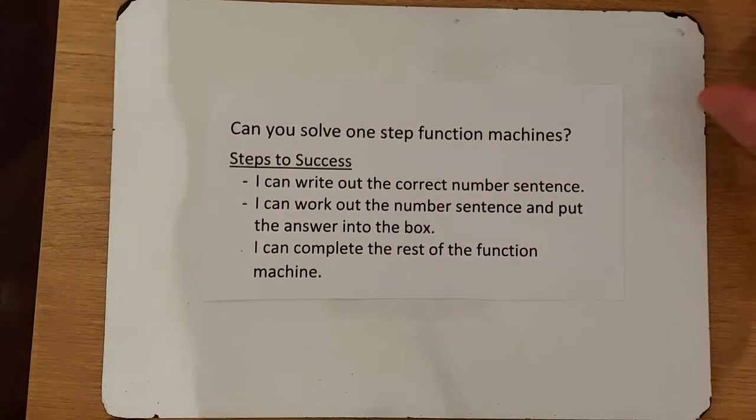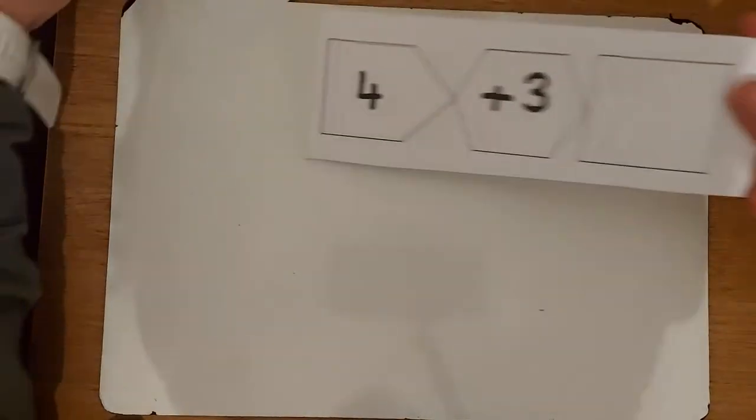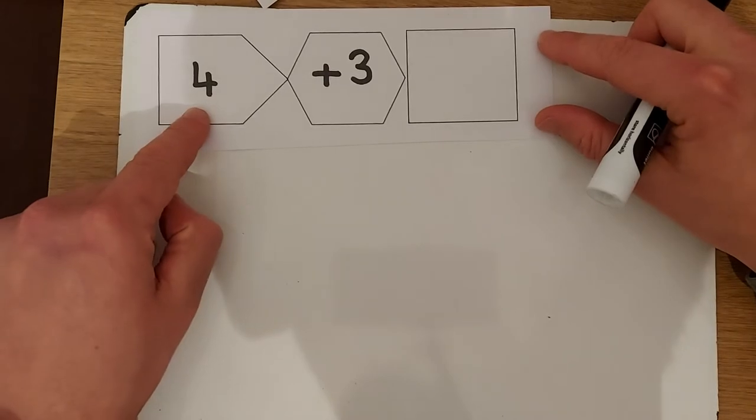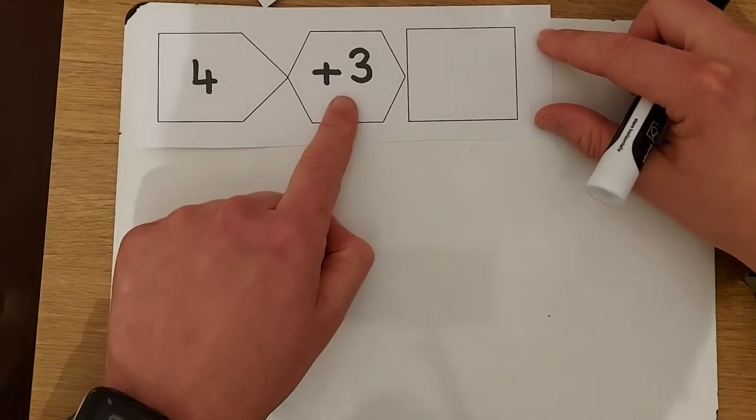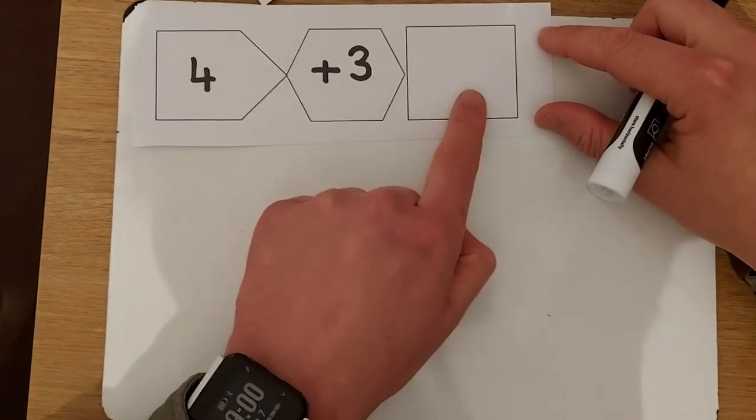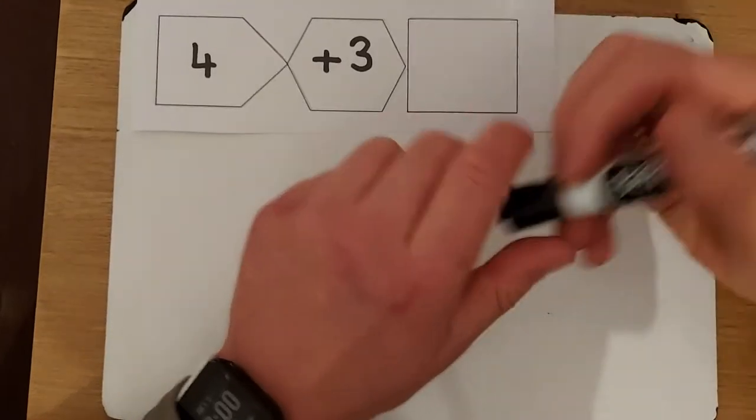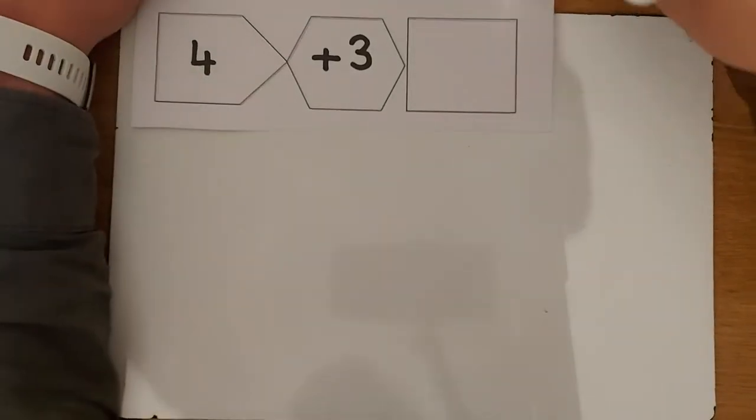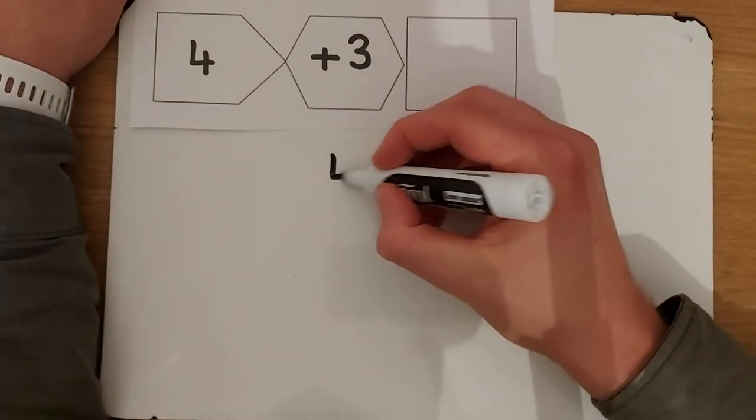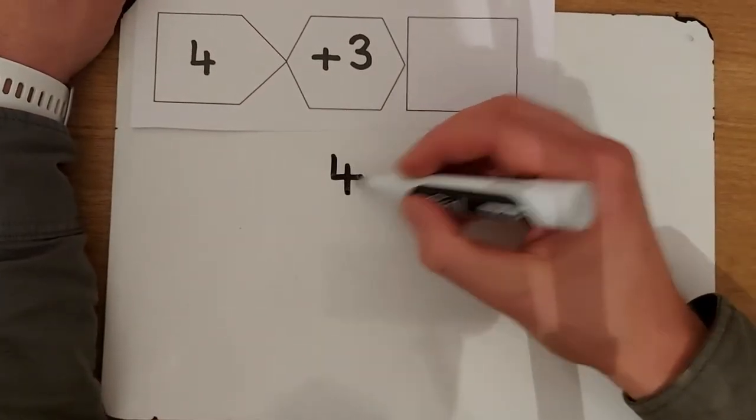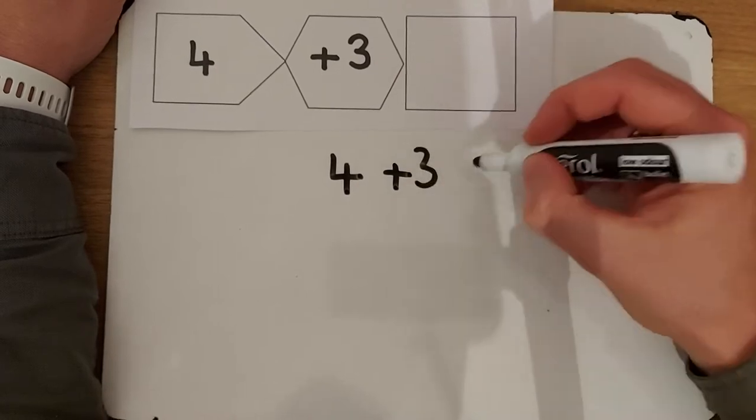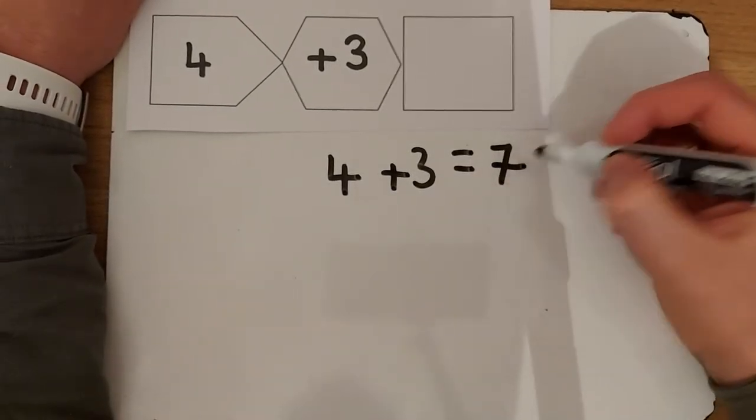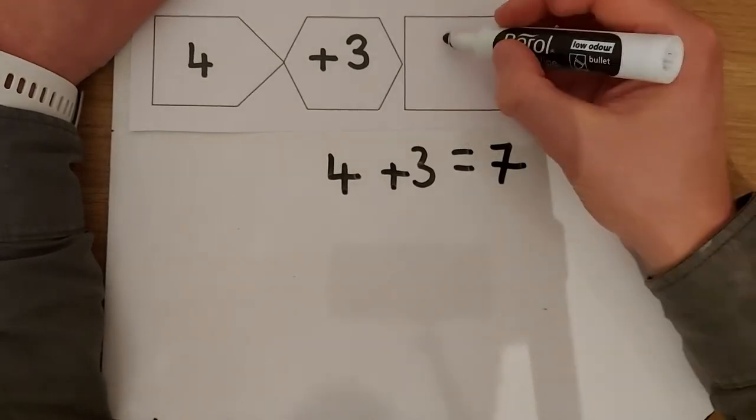Here's an example function machine. This is what our function machine looks like. We're going to start with 4 and then we're going to add 3 and then find out the answer. This is very simple. First step: I can write out the correct number sentence. The correct number sentence here would be 4 plus 3 and that would equal 7. Four plus 3 is 7 and then we'd write that in.